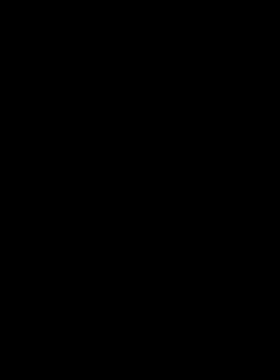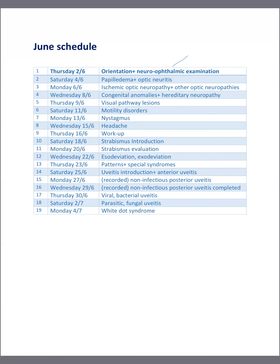There is something very good I'll share. After each session, I'll share the schedule. For example, you will find that we have sessions: the first session will be orientation together with neuro-ophthalmic examination. On Saturday, the second session will be regarding papilledema and optic neuritis. You will find the whole schedule for June months, which will cover three branches: neuro-ophthalmology, strabismus, and uveitis. This is considered one third of the curriculum.